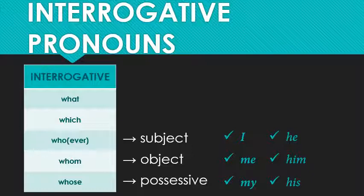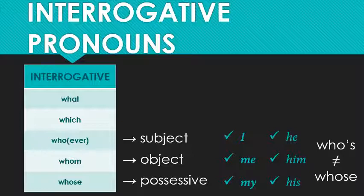Regarding the possessive, one important note is not to confuse whose with the contraction who's — both pronounced the same way. This is the same issue students have with its and it's. If there's an apostrophe, it's a contraction — subject and verb combined. So 'who's on top' means 'who is.' But with no apostrophe, it's the possessive. 'Who's there?' means 'Who is there?' Whereas 'Whose ice cream is this?' is asking who the ice cream belongs to. 'Whose computer is that? It's the teacher's computer' — it belongs to the teacher.